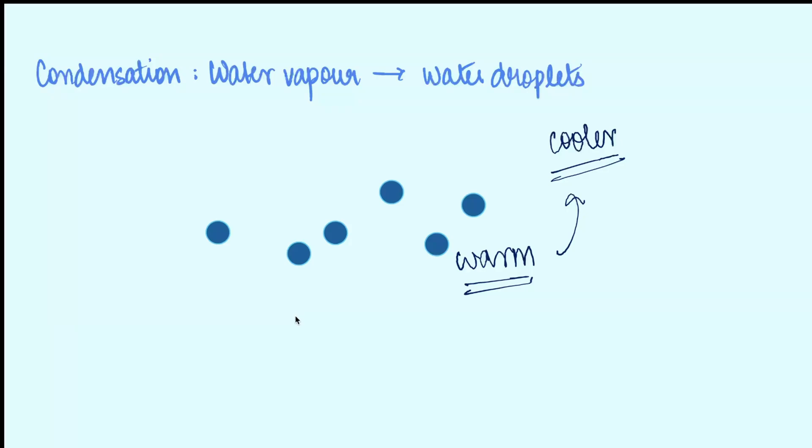And this is very similar to what we observed in our experiment. But there is a little bit more to it. Because when water vapour condenses, it requires some tiny particles like dust or pollen to which they cling on to, forming tiny droplets around these particles.